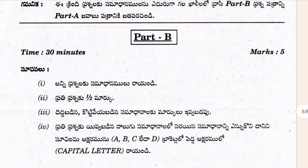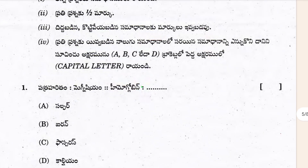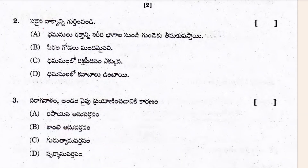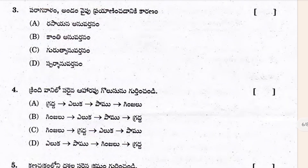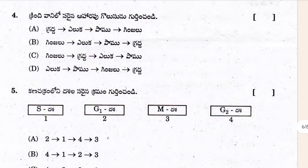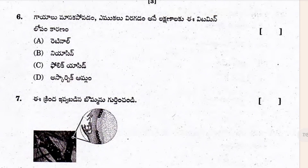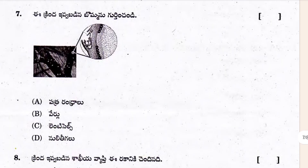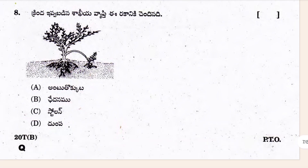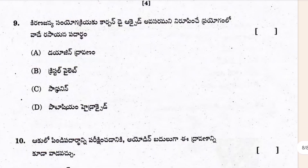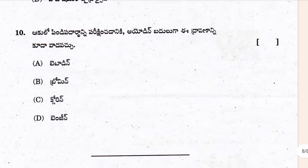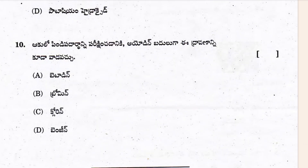Then after you can see Part B from here. So I hope it's clear. This is our June 2019 paper, as I already mentioned. I hope it's going to be very helpful for you all. We will meet in the next video. Jai Hind!